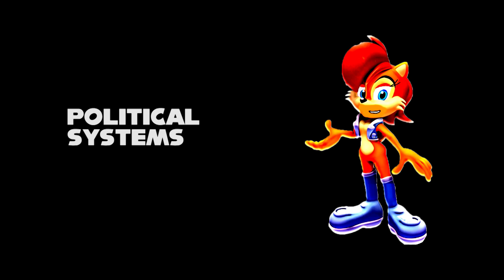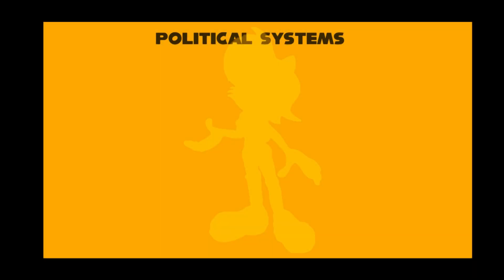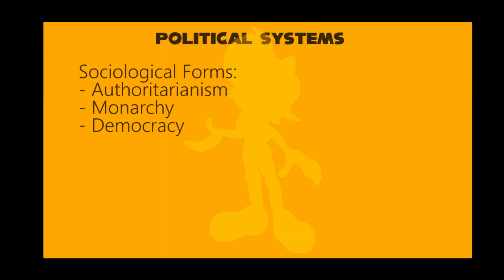Hello, I'm Princess Sally Acorn. We're now ready for the next part. Another form called sociological form of political science: authoritarianism, monarchy, and democracy.